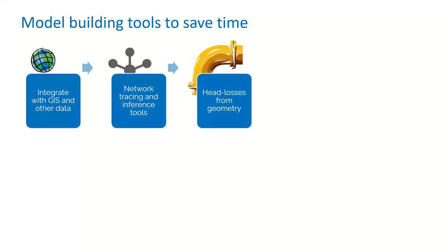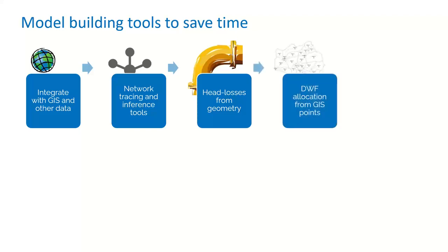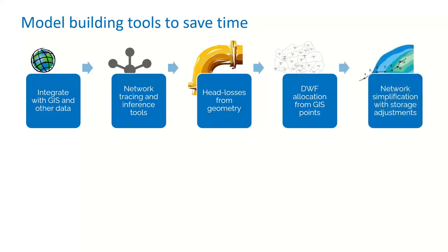Once you have a model with no gaps, a next step could be to apply head losses — not only from network geometry but from results. ICM can update these parameters based on velocity of flow in the pipe, giving a more dynamic solution. Once the network is built, you can also begin allocating dry weather flow. While InfoWorks ICM might not be a true GIS system, you can still utilize and digest GIS data — for example, using a GIS shapefile to find a coordinate system and associate dry weather flows spatially using SQL queries.